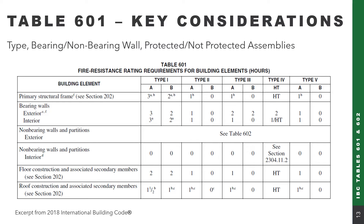Let's move over to Table 601, which focuses on the inside of our exterior walls and also interior walls of the building. Some things to take into account when looking at this: what is our building type, is it a bearing or non-bearing wall, and is it a protected or unprotected assembly?